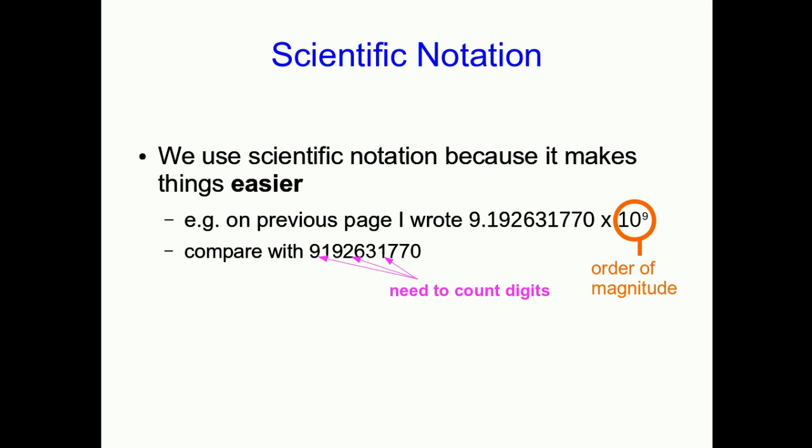And so we know that that nine is nine billion. Although a scientist would prefer just to say nine times ten to the nine, because what we call a billion in North America, for example, isn't what they call a billion in Britain. So we all agree what ten to the nine means, but we don't all agree what billion means.